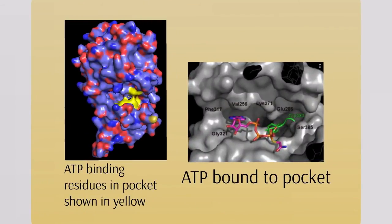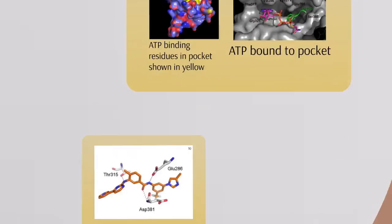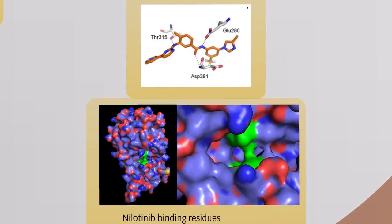Nilotinib inhibits ABL tyrosine kinase by binding to the kinase domain in the pocket where ATP normally binds on C-ABL. More specifically, it forms hydrogen bond interactions with threonine-315, glutamate-286, and aspartate-381 on the ABL protein.